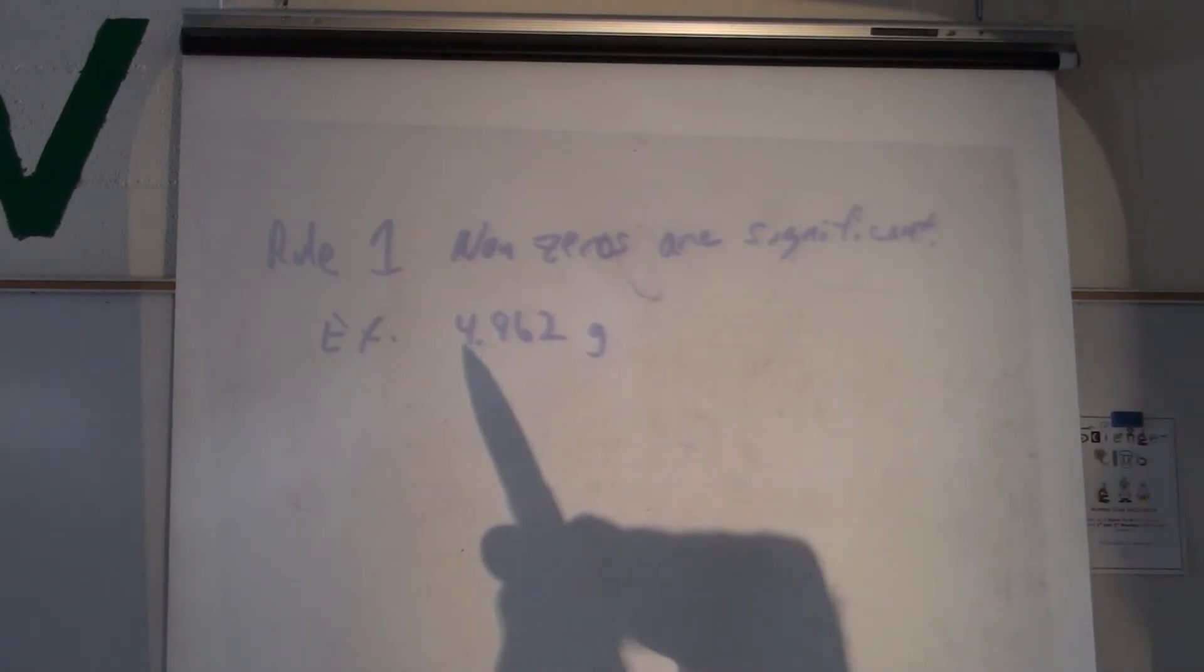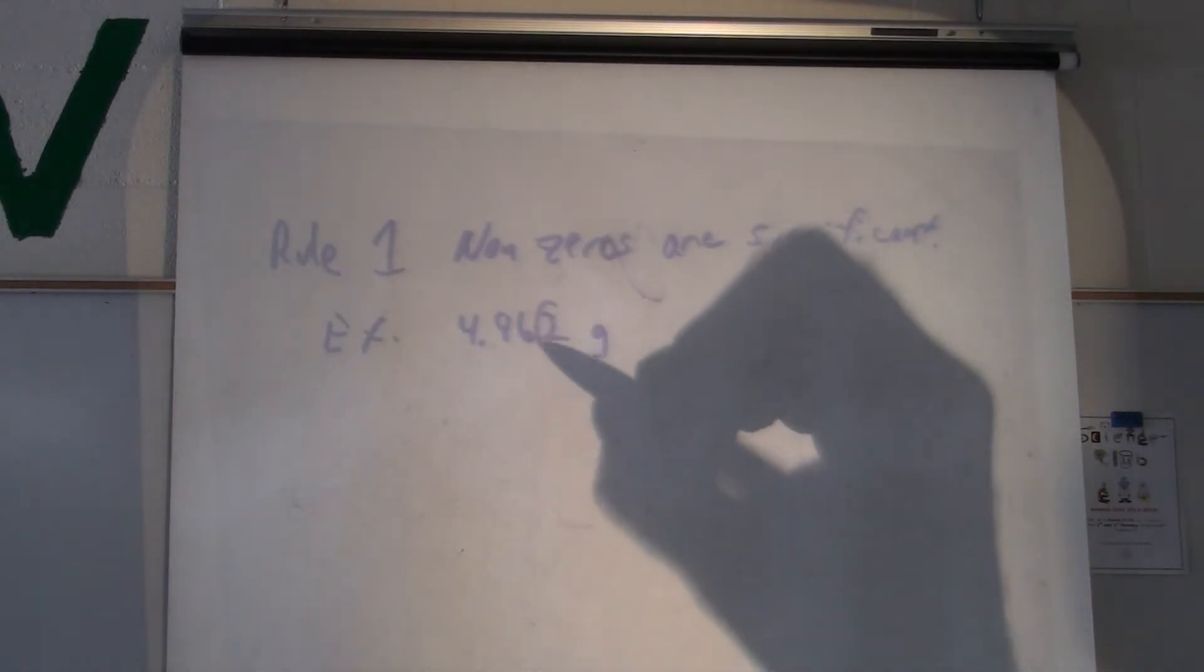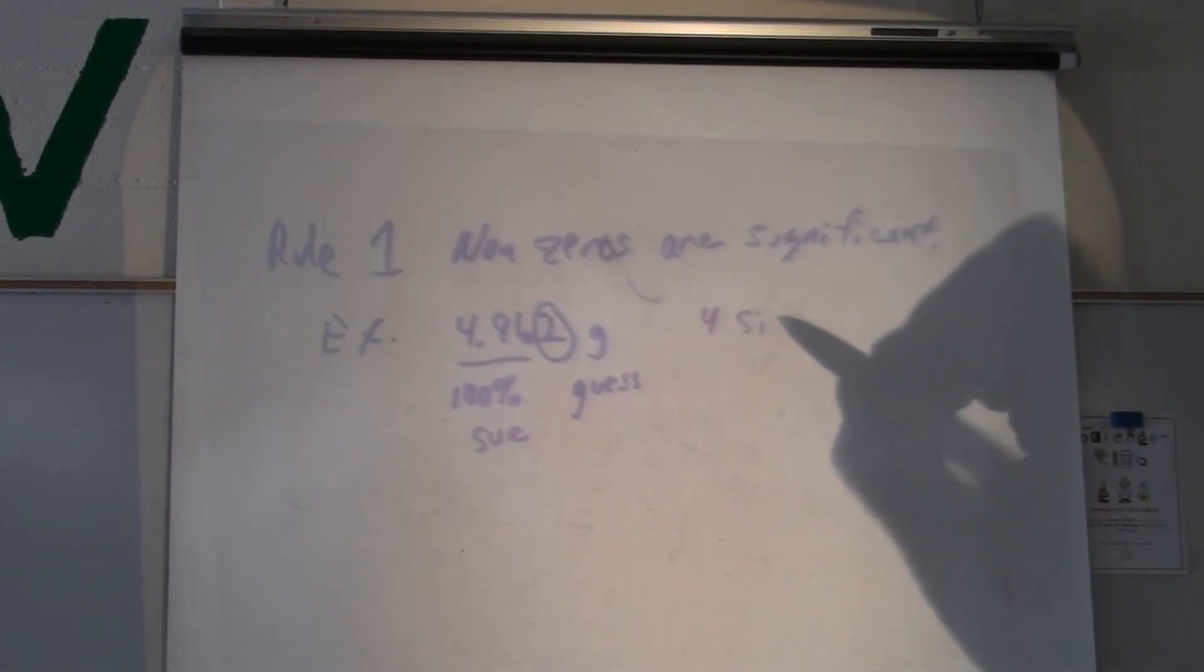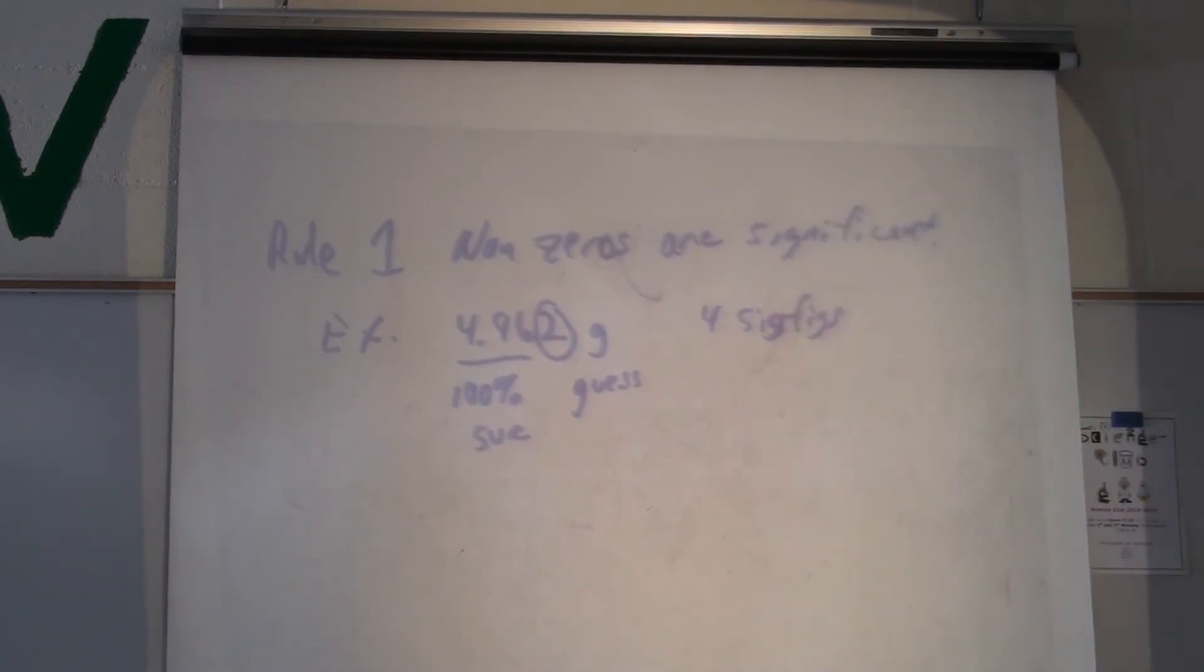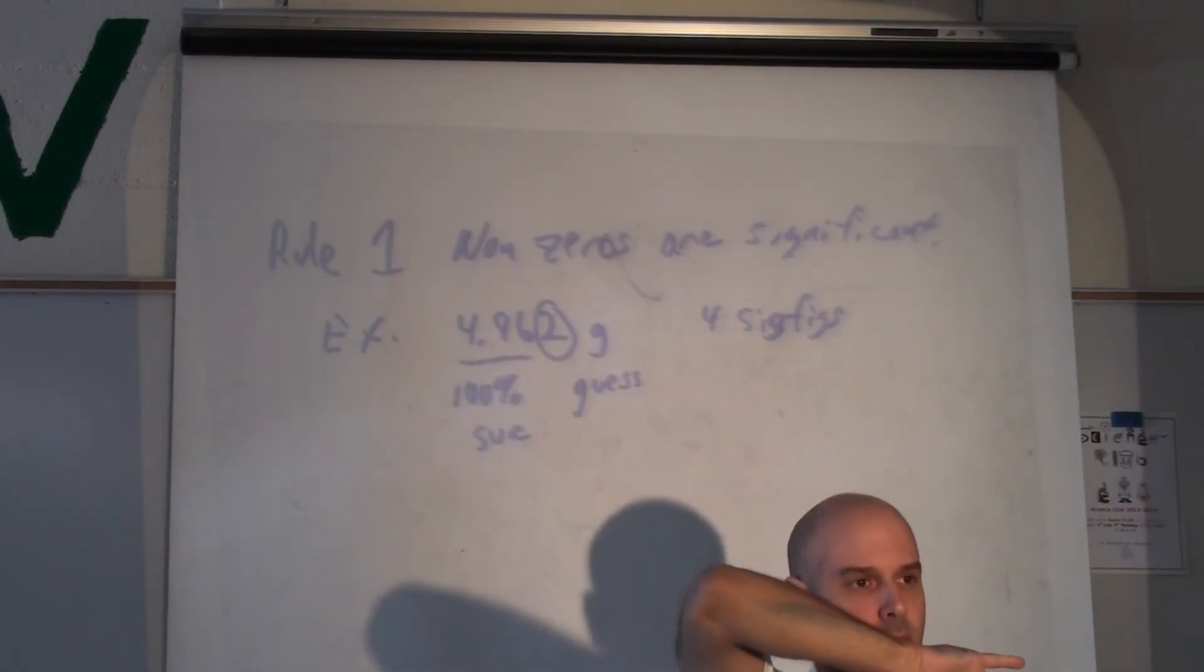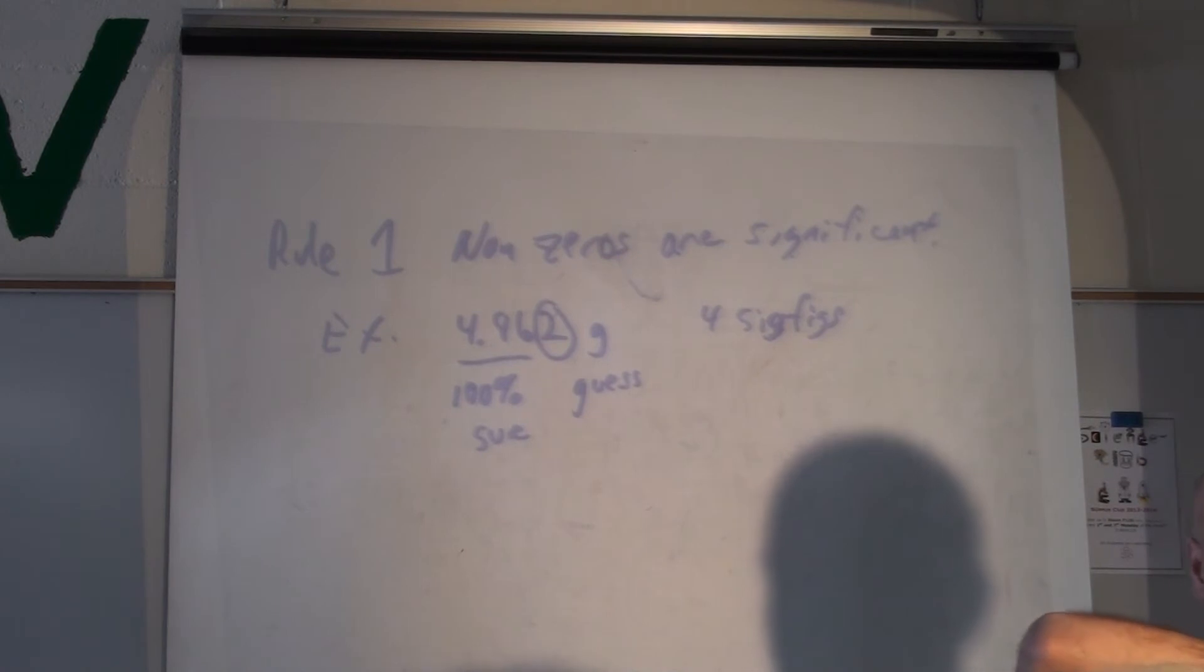Non-zeros are significant. Is that a zero? No, that's what I mean by non-zero. It's just not a zero. So non-zeros are significant. The 2 is the guess. These numbers we're sure about. And we have a total of 4 sig figs. So non-zeros are always significant.